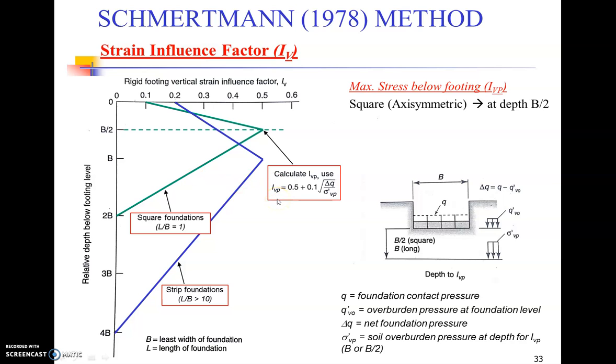This is something that you have to do every time: just plot these lines starting from 0.1, getting to 0.5 exactly at B/2. You don't need to do it on scale, but if you do it on scale it's going to give you good results. You can do it on plain paper and then it goes straight and becomes 0 at depth equal to 2 times the width of the foundation. Similarly, it starts from 0.2 for the strip footing, goes all the way to maximum value 0.5 at depth equal to the base of the foundation.